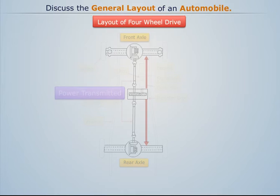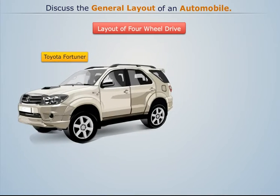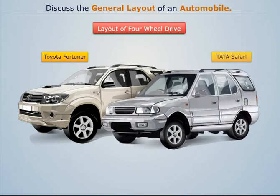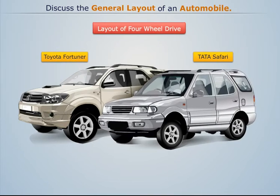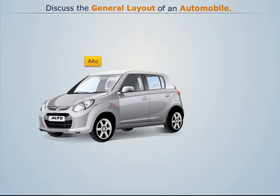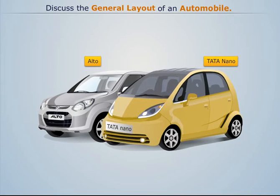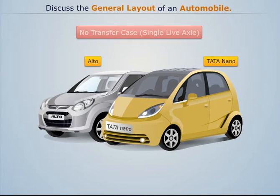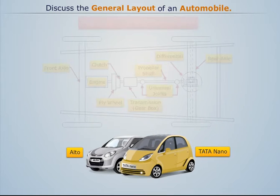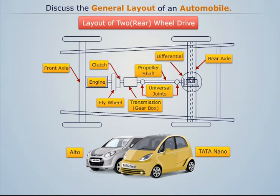Here we see that power gets transmitted to both axles. Examples of such vehicles are Toyota Fortuner, Tata Safari, etc. But in some vehicles like Maruti Suzuki Alto and Tata Nano, no transfer case is required as there is only one driving or live axle.